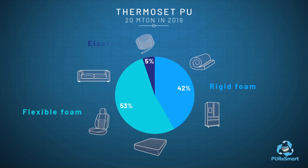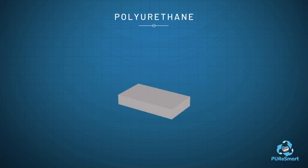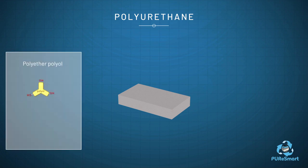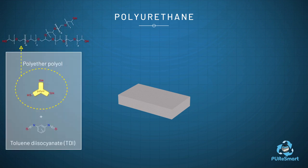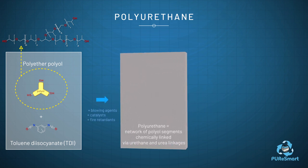The remaining 5% consists of durable elastomers, with applications in dashboards, tubing, coatings and sealants. Conventional flexible polyurethane foam is synthesised with a polyether polyol and toluene diisocyanate, forming a network of polyol segments linked via urethane groups.